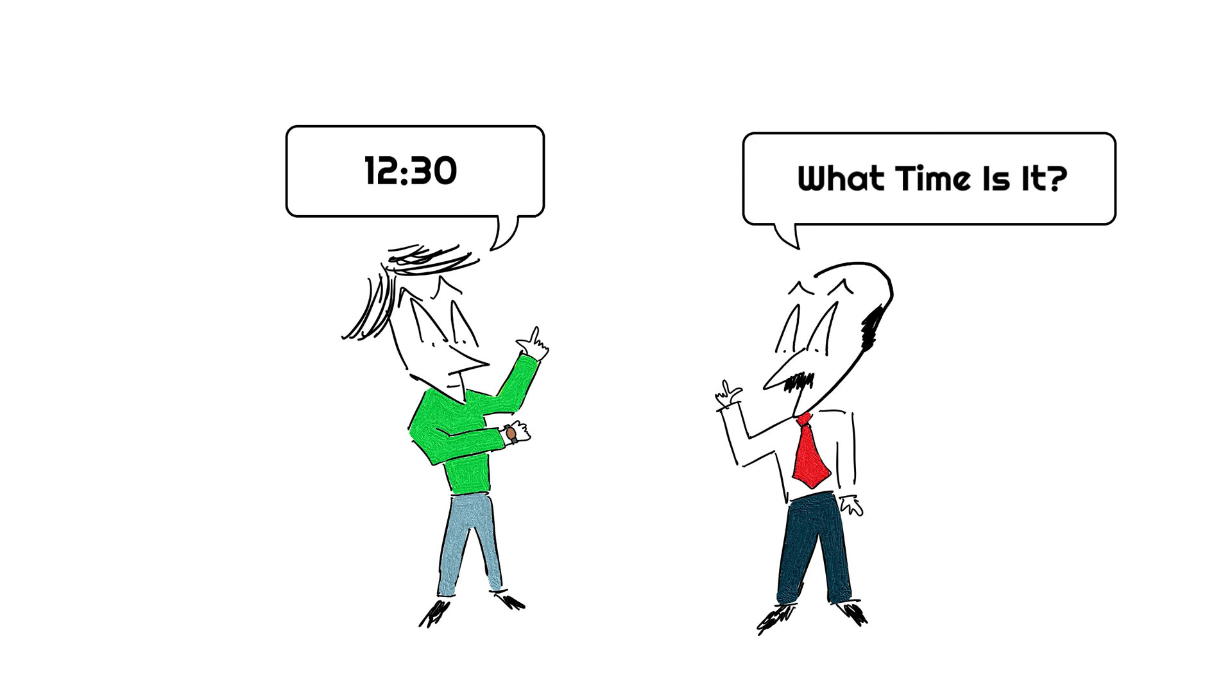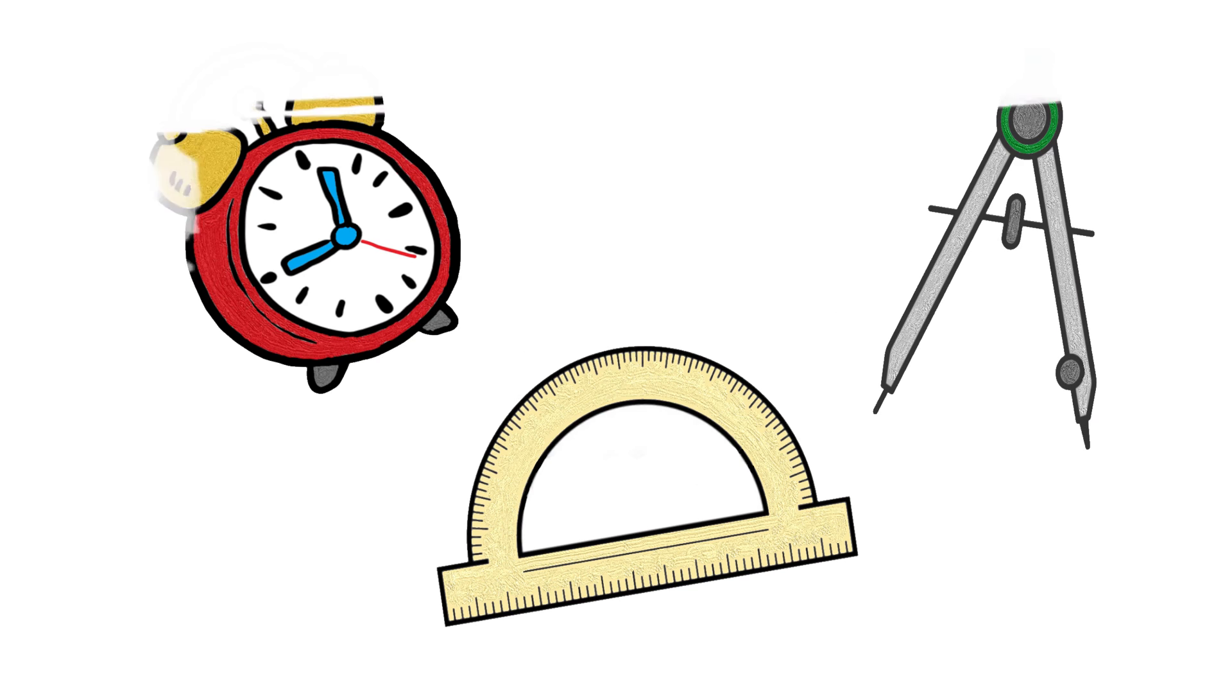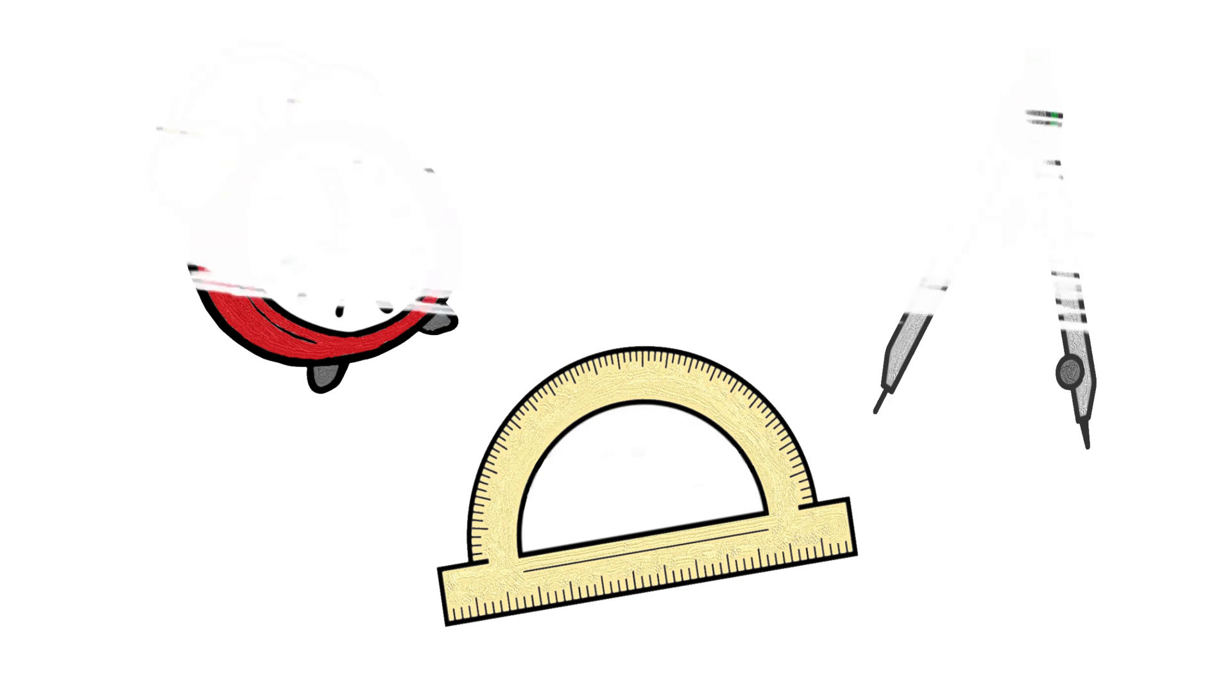Every time we look at our watches, we're doing something Babylonian. Every time we measure an angle, we're doing something Babylonian. Anytime we talk about zodiac signs, we're doing something Babylonian. There are plenty of day-to-day stuff that we do that was inspired by the Babylonians from thousands of years ago.